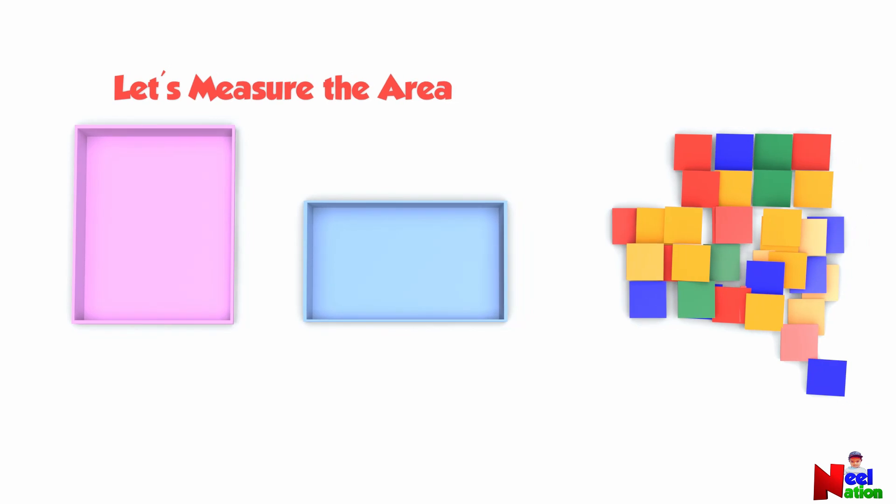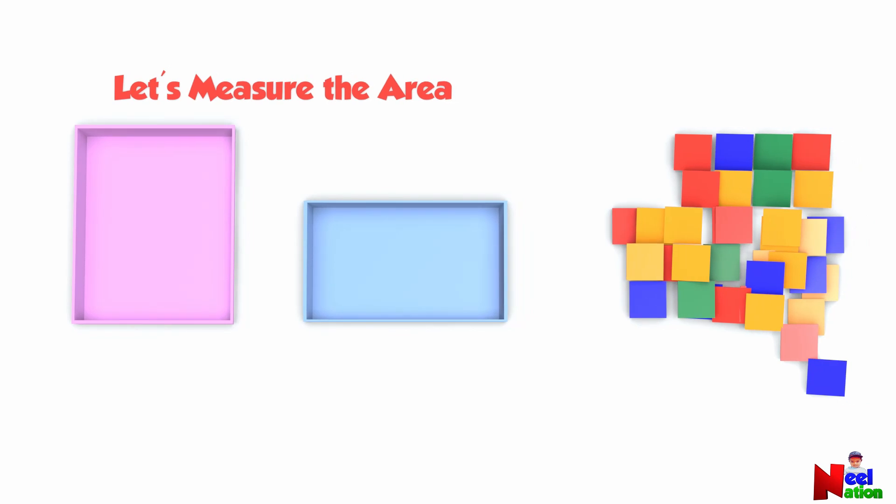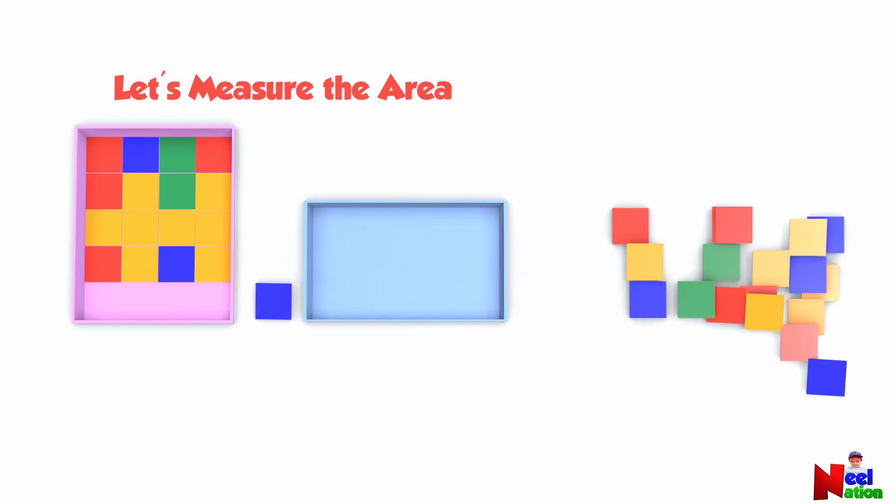Here you have some square tiles. These tiles are of the same size and shape. Let's cover the area of the trays with the square tiles, placing them side by side. Let's start with the pink tray. Once you have covered the whole area, let's count them.